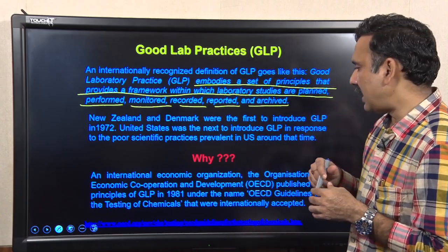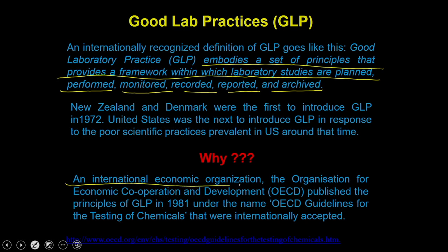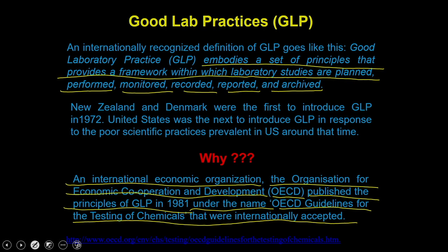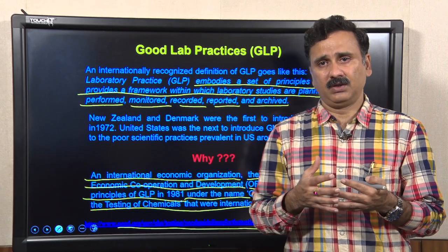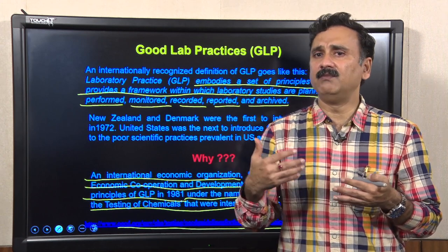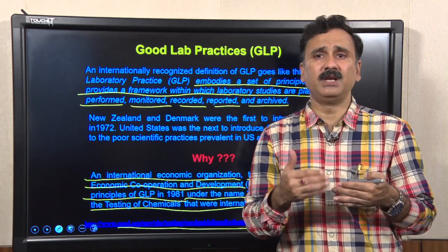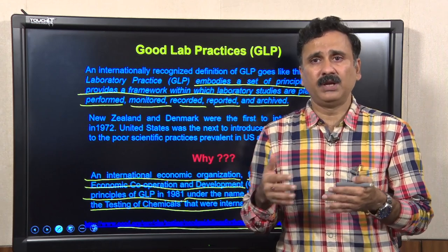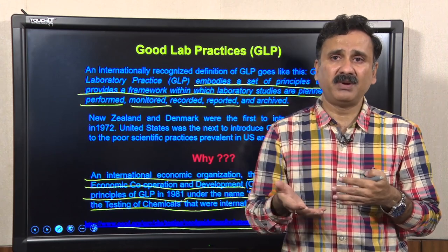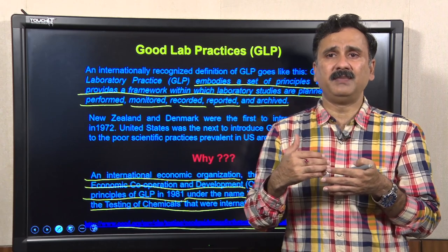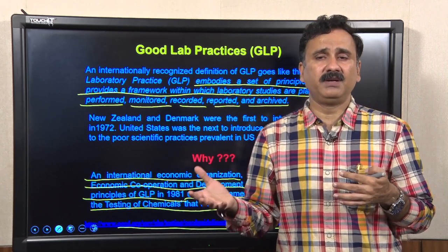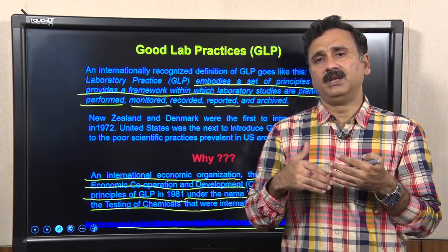For this purpose, the Food and Drug Administration formulated the Organization for Economic Cooperation and Development, that is OECD. The OECD published the principles of GLP in 1981 under the name OECD Guidelines for the Testing of Chemicals. I have provided a link you can follow to read the complete guidelines. I will give you a summary of some of these guidelines — what you should follow when you enter a research lab or school lab so that you protect yourself, generate data based on scientific principles that can be reproduced, and ultimately help human society.